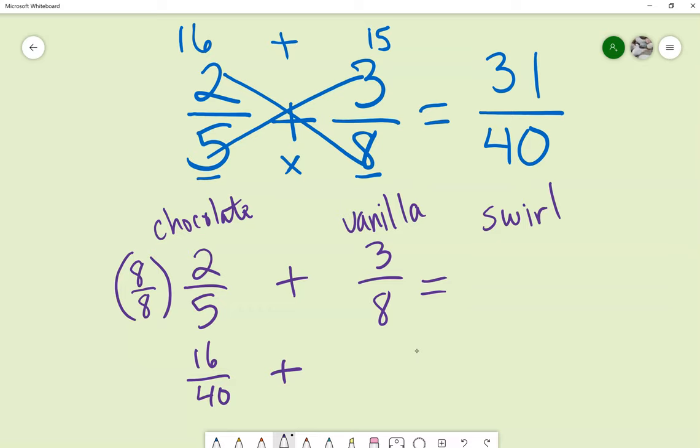Plus, now I need to take some of my chocolate and add it to my vanilla, which would be 5 over 5 because 5 over 5 equals 1. 5 goes into 5 one time. That would give me 15 over 40.